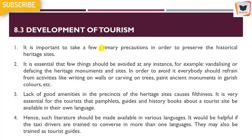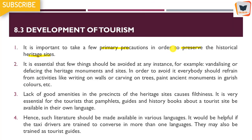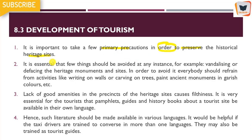Then a few primary precautions need to be taken in order to preserve the historical heritage site. The things you want to show foreigners or Indian travelers — those things need to be kept safe, preserved, cleaned, and renovated wherever things have deteriorated. You need to set this order — only then will tourists come. If the thing is not worth seeing, no one will go. So these primary precautions need to be kept as a person who works for the government in tourism.